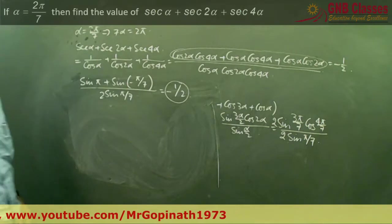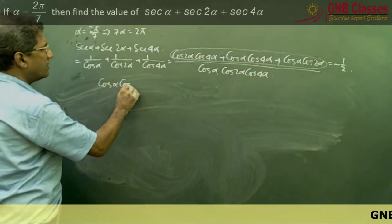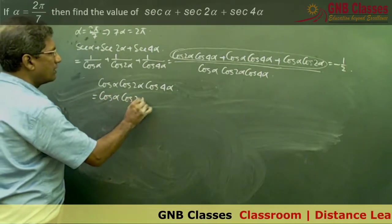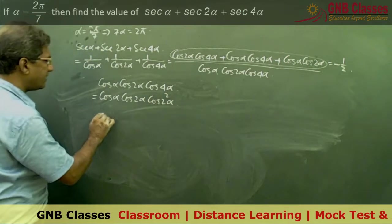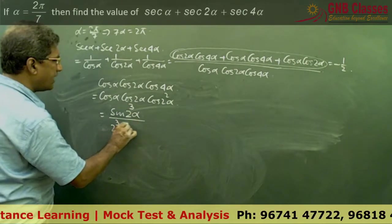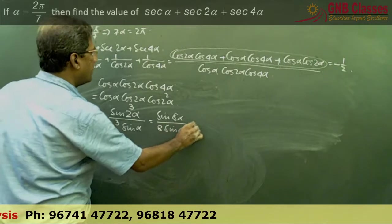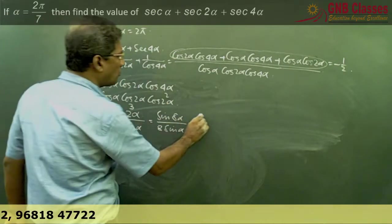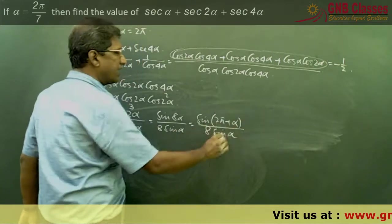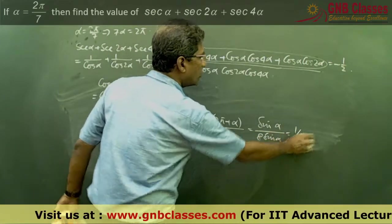Now for the denominator: cos α · cos 2α · cos 4α. This matches our product formula with cos α · cos 2α · cos 2²α, so n = 3. Applying sin(2^n α) / (2^n sin α) gives sin(8α) / (8 sin α). Since 7α = 2π, we have 8α = 2π + α, so sin(2π + α) = sin α. Therefore sin α / (8 sin α) = 1/8.